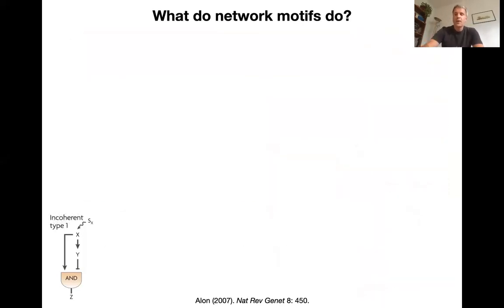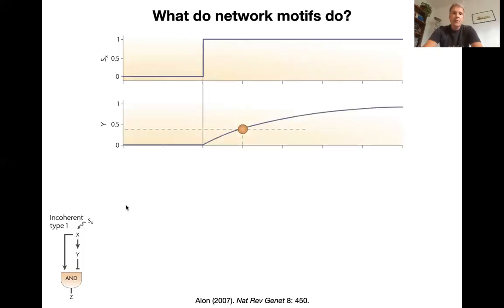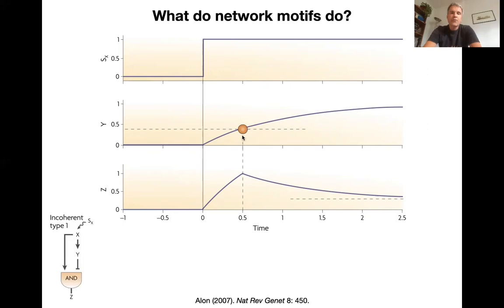So let's turn to the incoherent feedforward motive, which is a little weirder, right? So there seem to be two branches to contradict each other. So what happens if you have a signal that switches on and stays on here? You get, of course, an induction of X and at the same time also Y is building up and you get an activation of Z. But at some point Y will reach the threshold at which it starts to inhibit Z. So basically Z builds up and then as Y continues to build up, it'll be degraded again to a certain level.